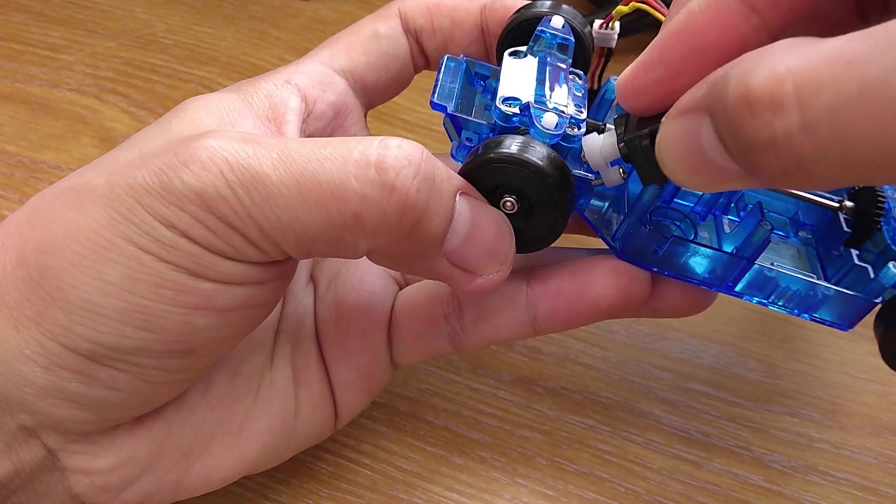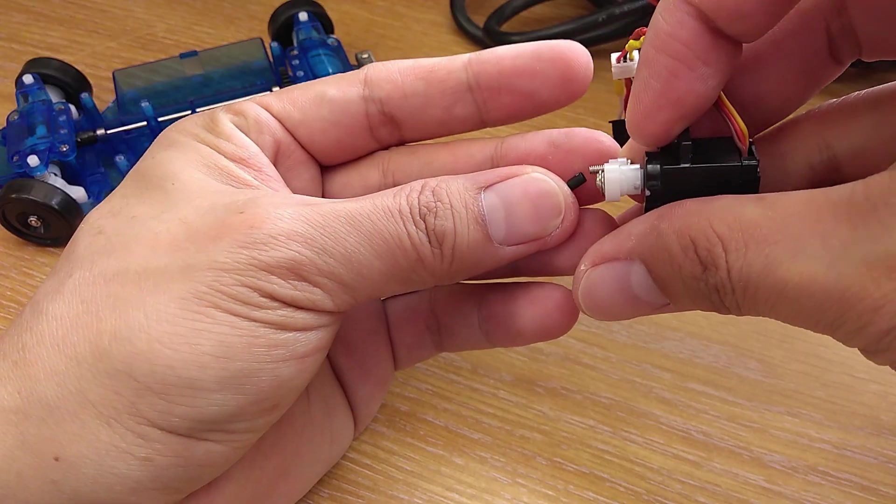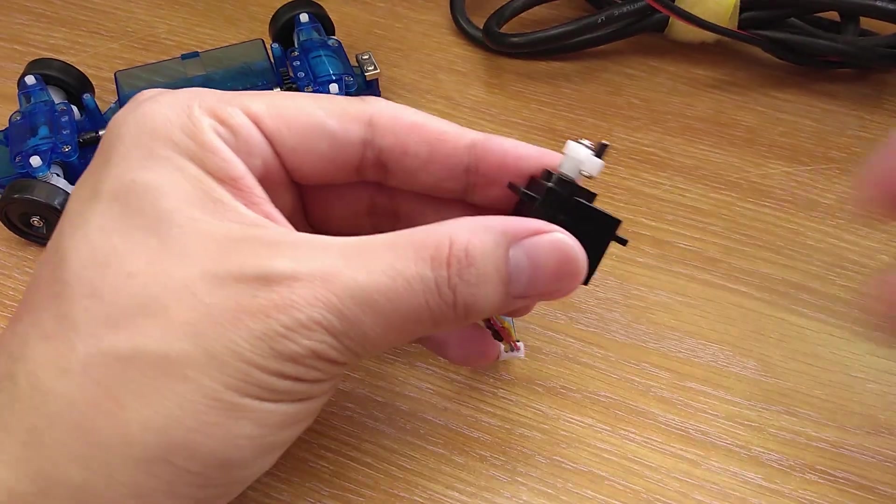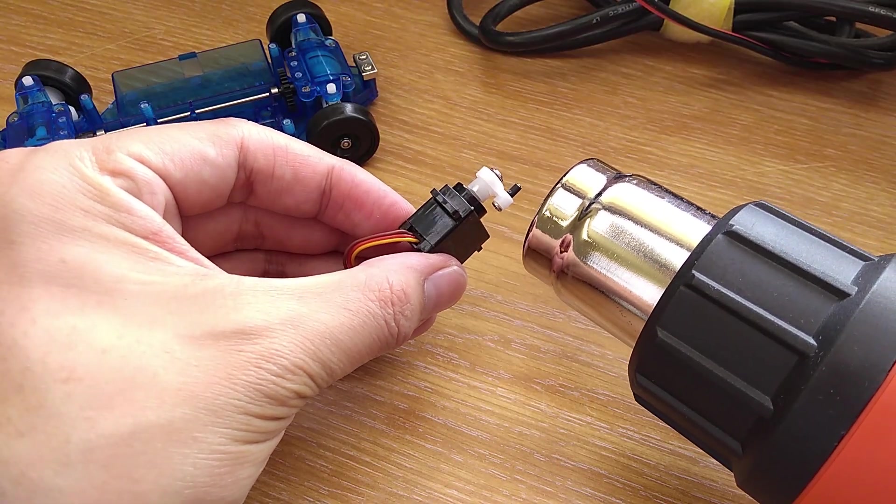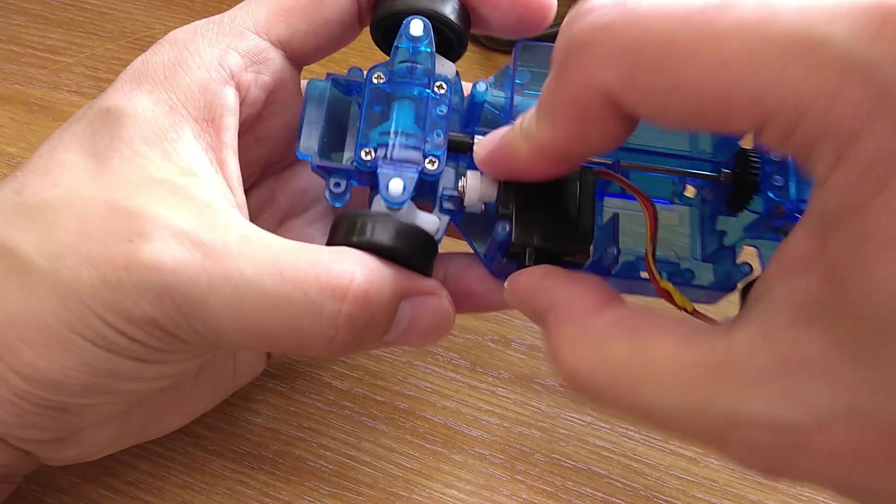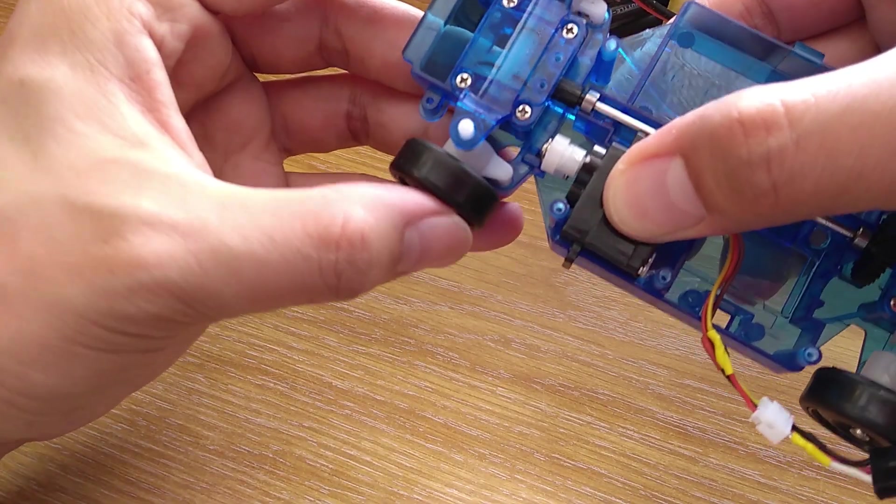There is a bit of gap between the steering rod and the servo so I'm gonna fill it by putting a shrink tube on the servo horn. Now I can fit it in with no problem and minimal slop.